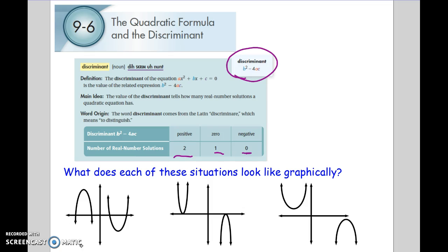At the bottom you'll see how this looks like graphically. Remember when we have two solutions, we have two x-intercepts. If you have one solution, you have one x-intercept. And here if you have no solutions, you have no x-intercepts, it'll never touch the x-axis.